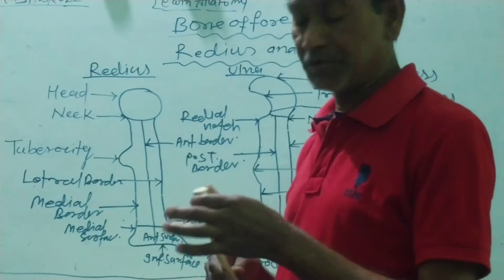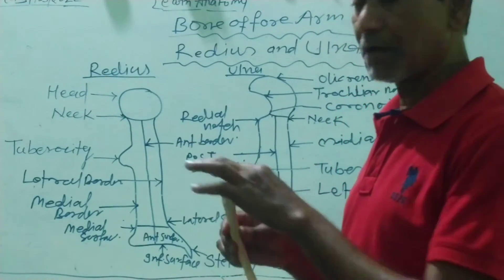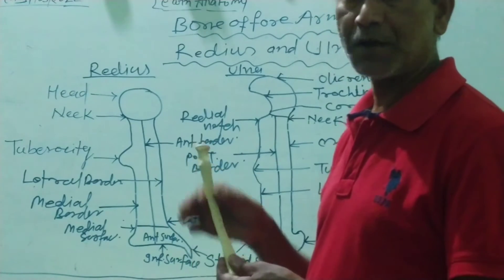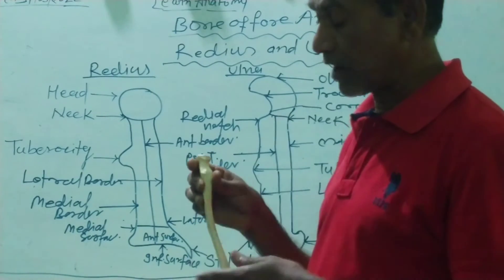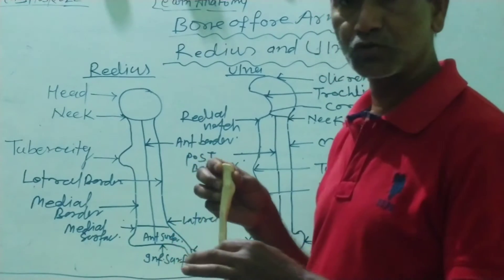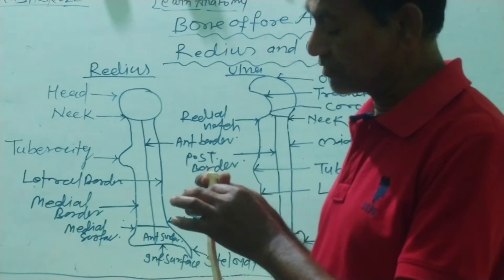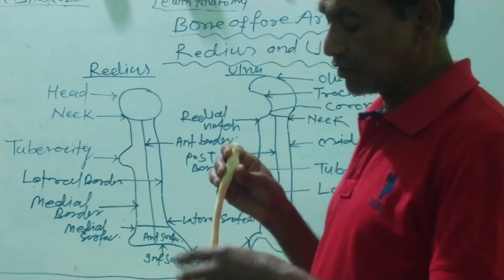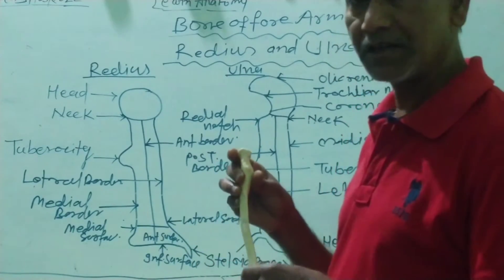The whole radius presents two ends and one middle part, which is the shaft of the radius. The shaft is divided into two parts: the upper portion just below the tuberosity forms the upper two-thirds of the shaft, and the part just above the lower end forms the lower two-thirds of the shaft.